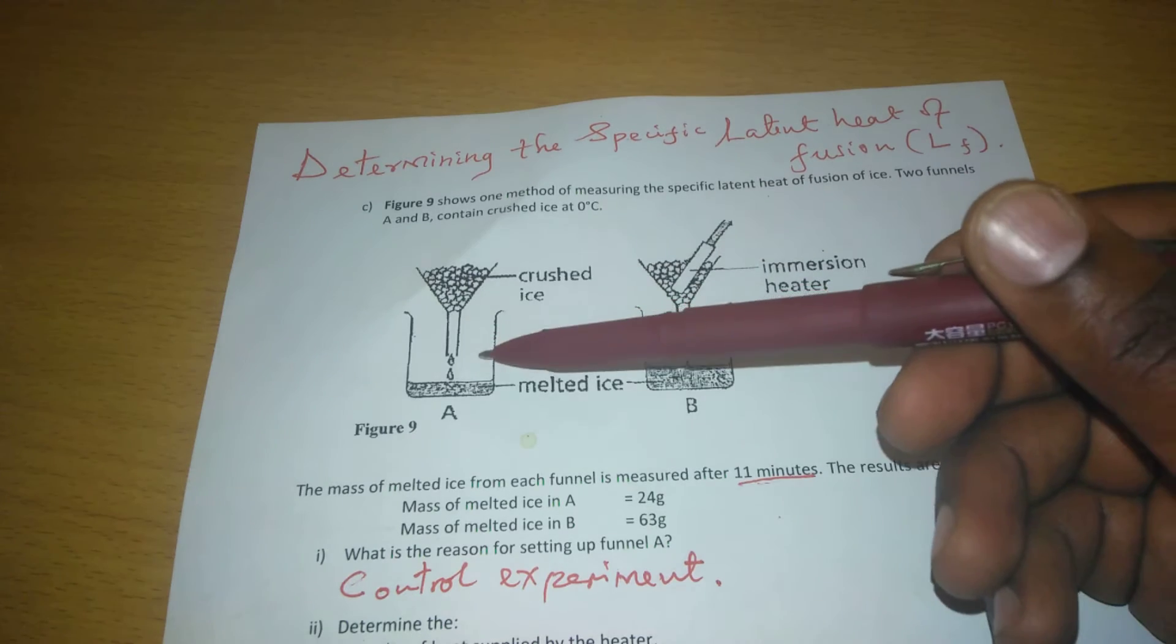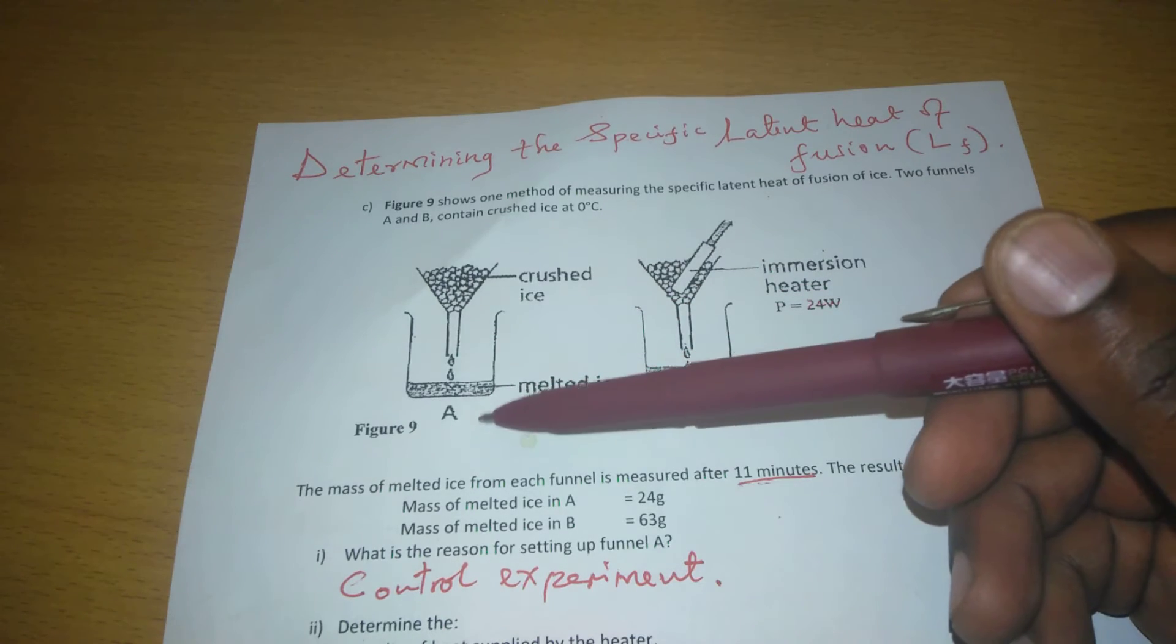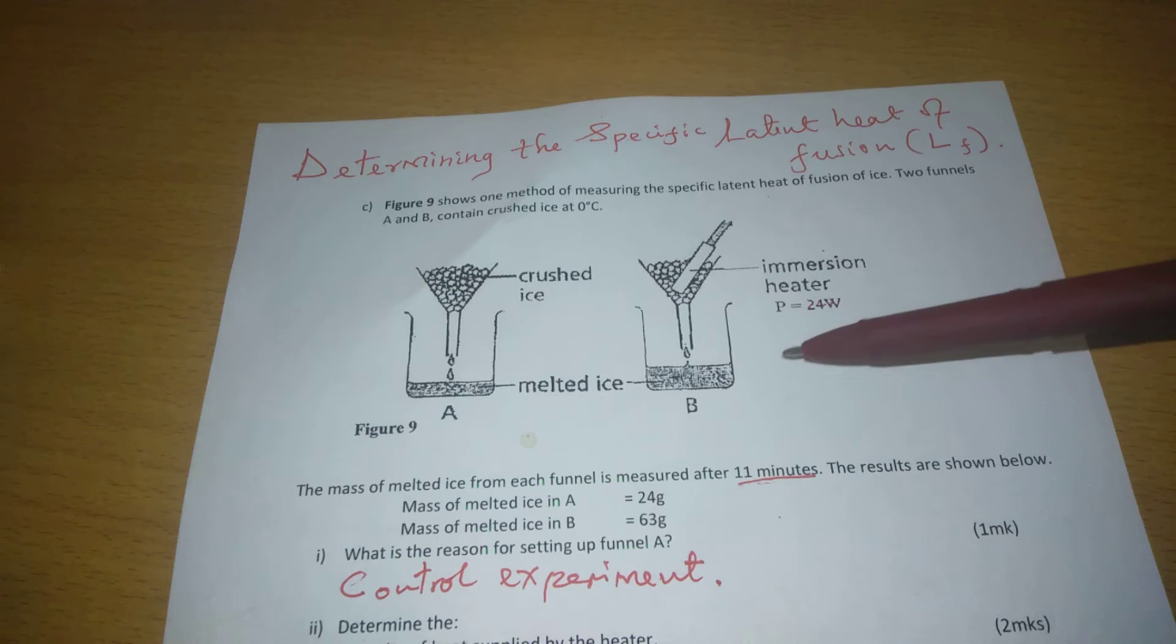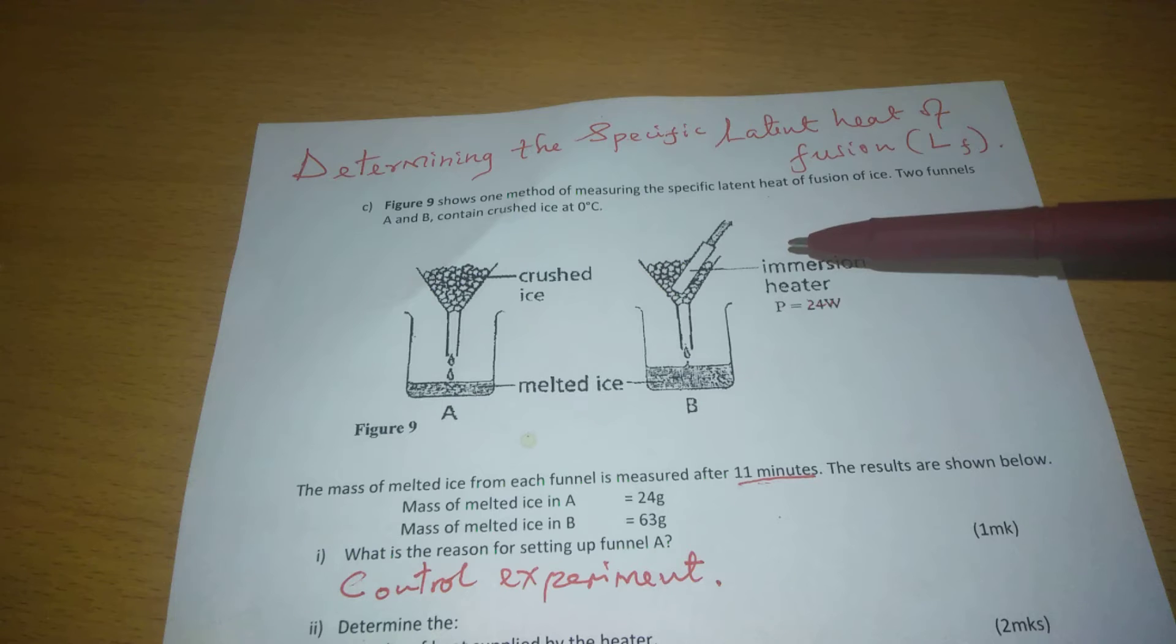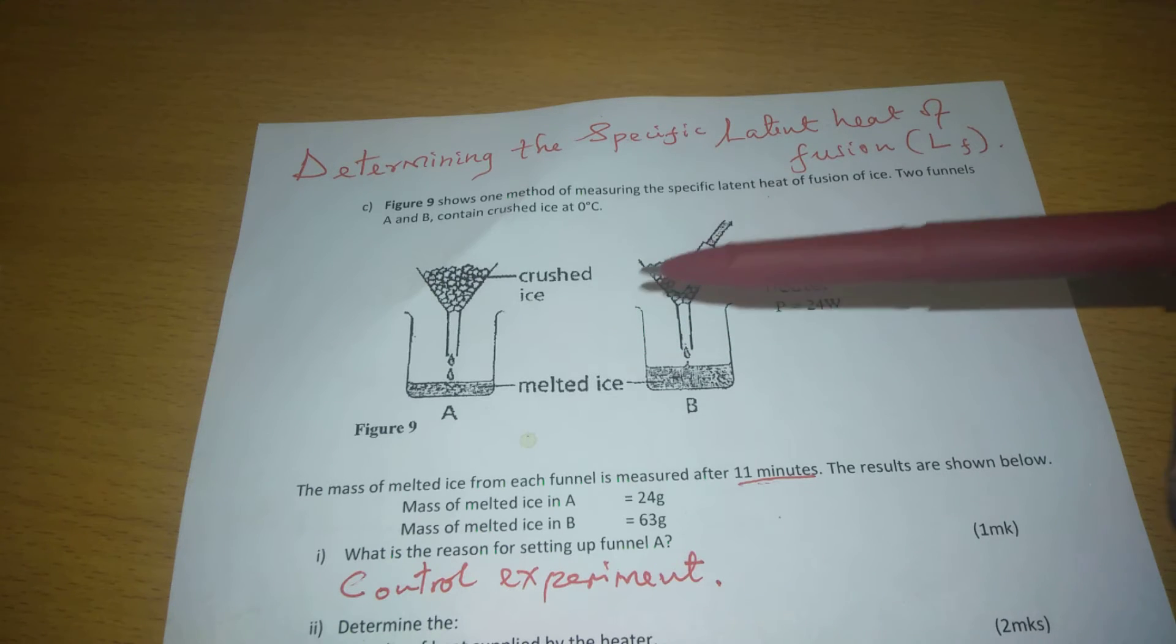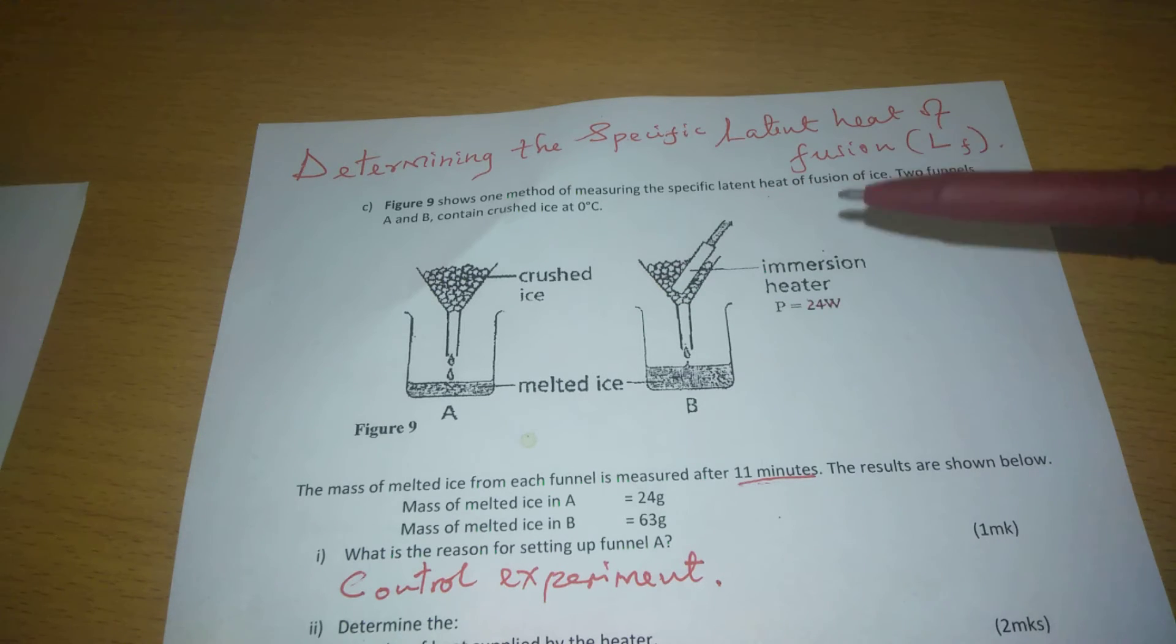Ice could have still melted even without an immersion heater. If we collect a given mass of ice from setup A and collect a bigger amount in setup B, then even in B, there is that background melting that could have taken place without the immersion heater. By subtracting the mass which has melted in B from what has been collected in A, we can get the ice which has been melted squarely by the immersion heater.